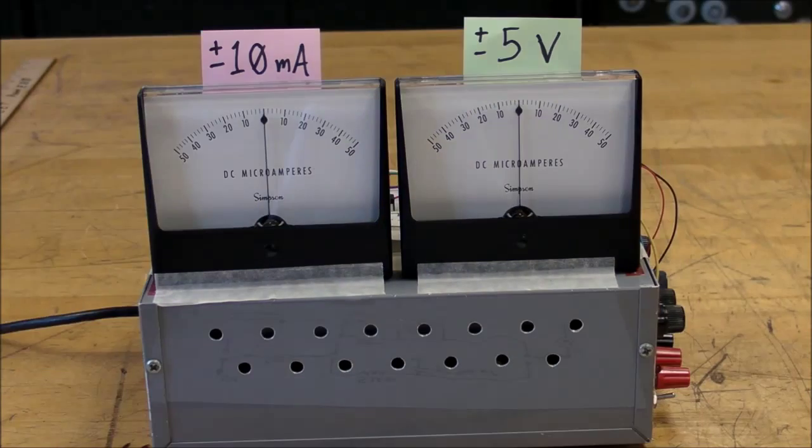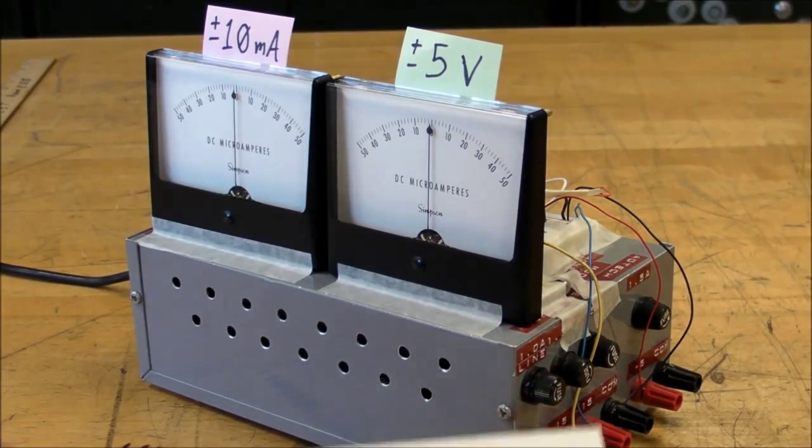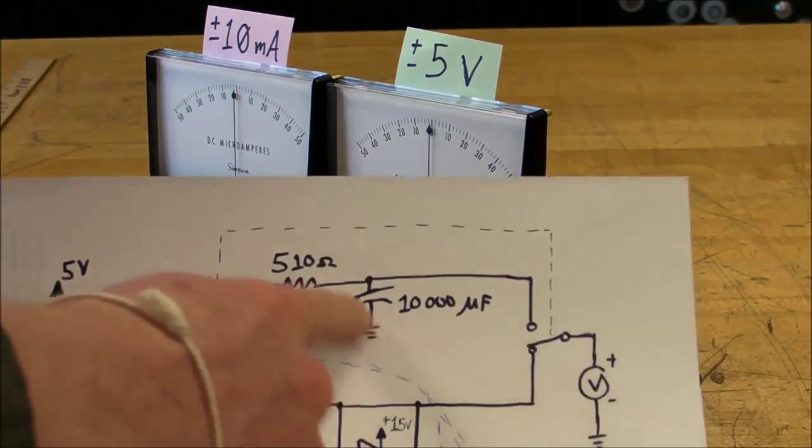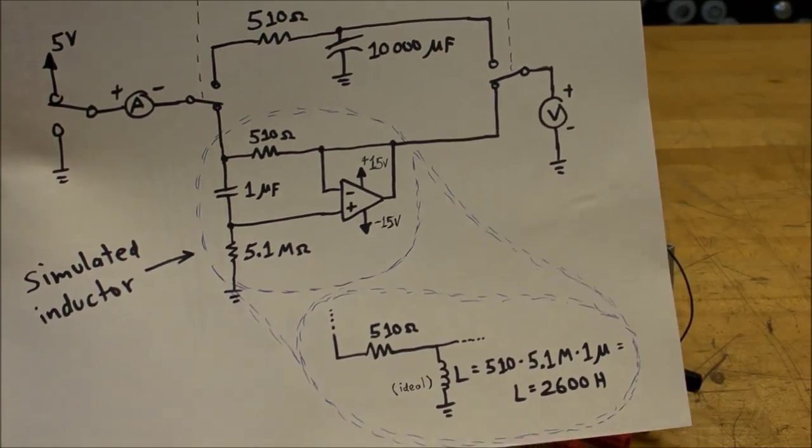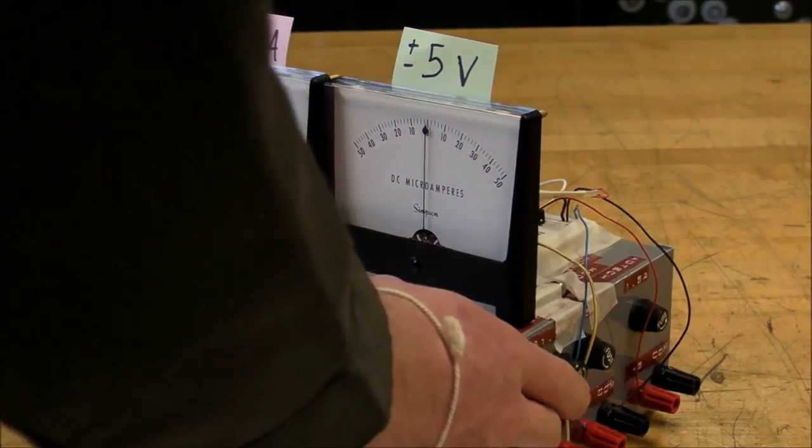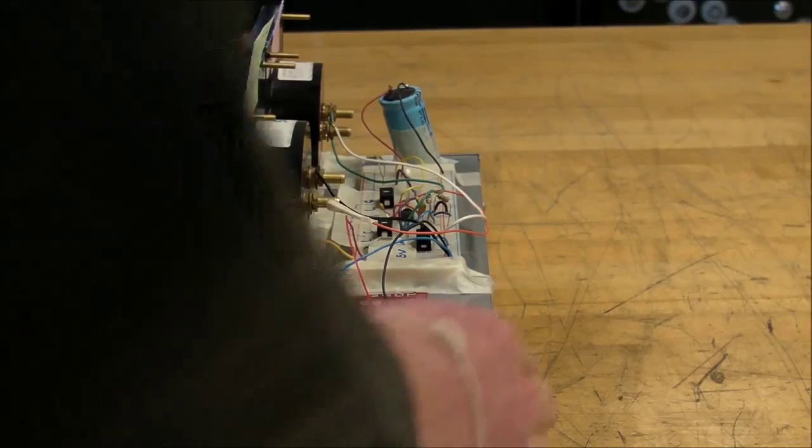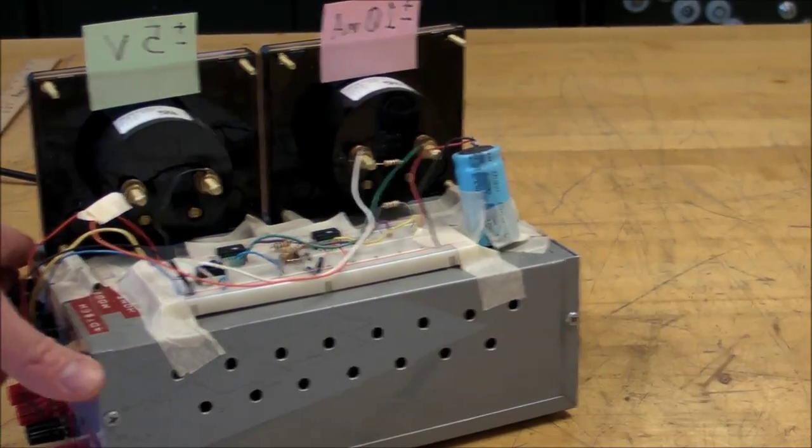So that's it - very simple demo of charging and discharging voltages and currents through inductors and capacitors. The time constant for the cap and also for the inductor circuit is 5.1 seconds if you do the math.